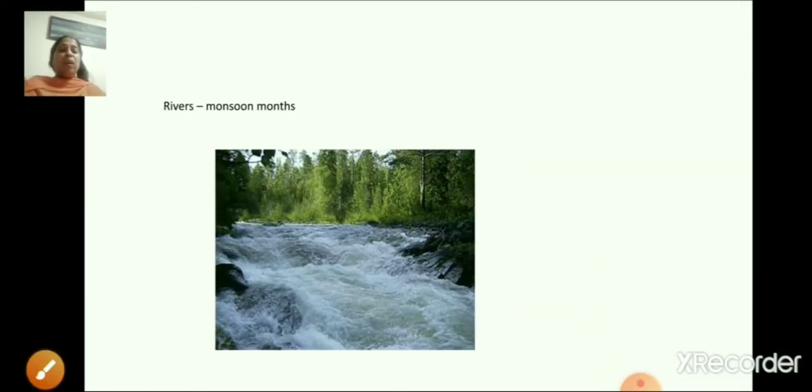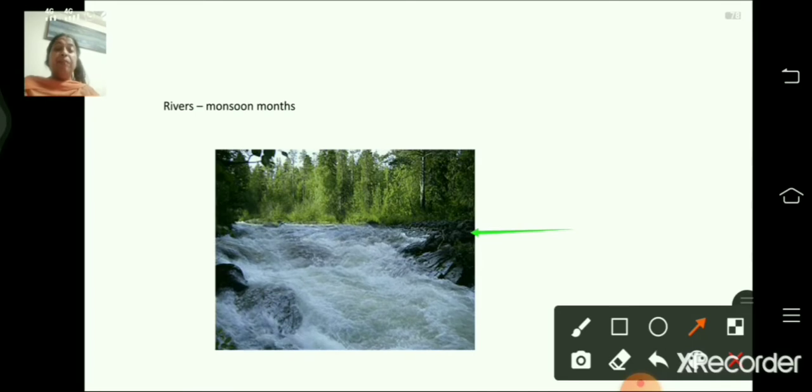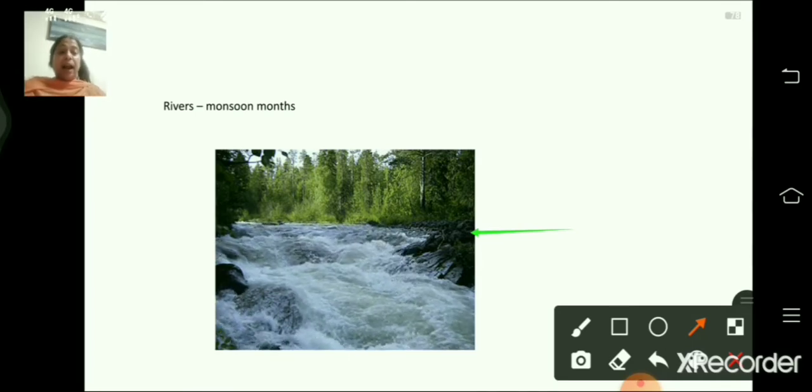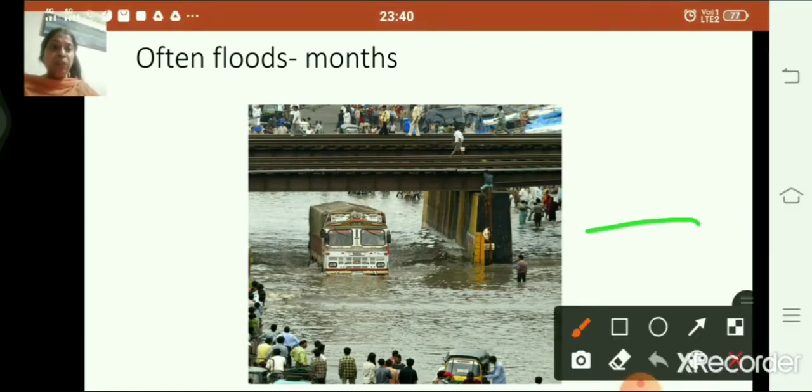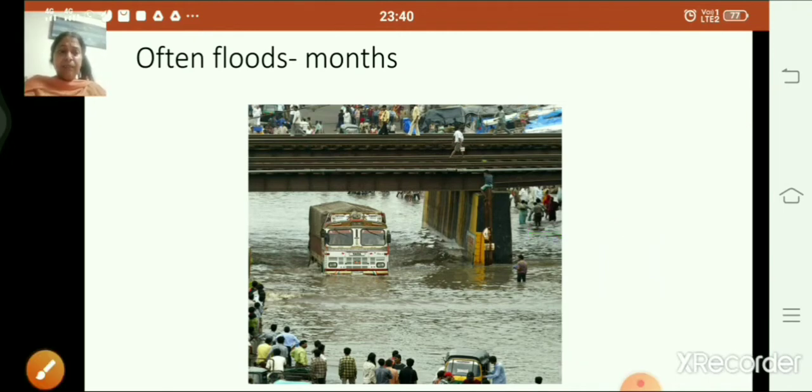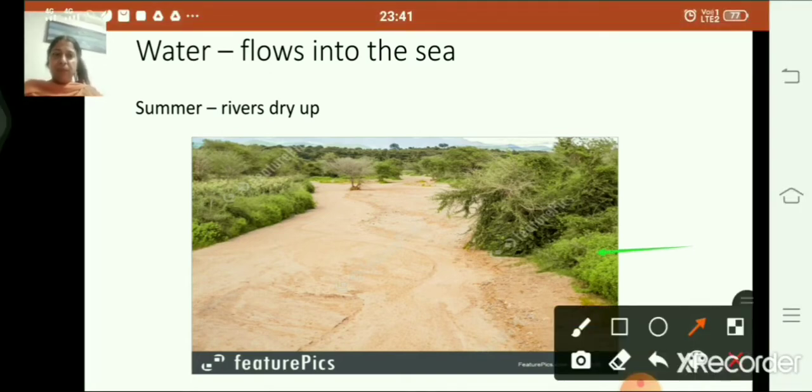So what happens during these monsoon months, rivers are full of water. Rivers are full of water and these often lead to floods during these months. When there is heavy rainfall for more days it often leads to floods, isn't it? And do you know children, most of this water simply flows into the sea. And during the hot summer, the rivers, many of our rivers dry up. Is that clear children?